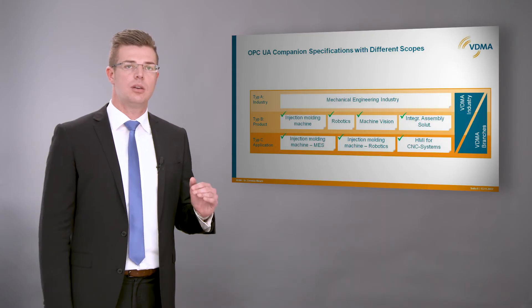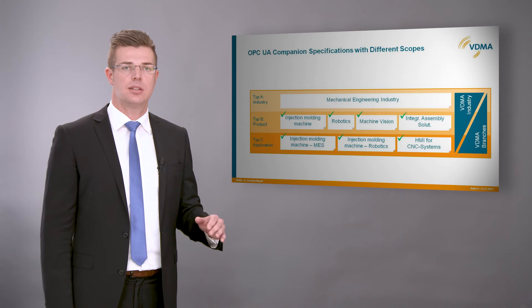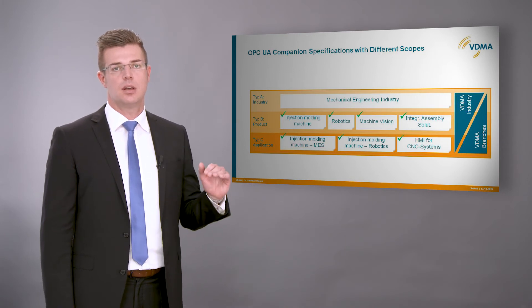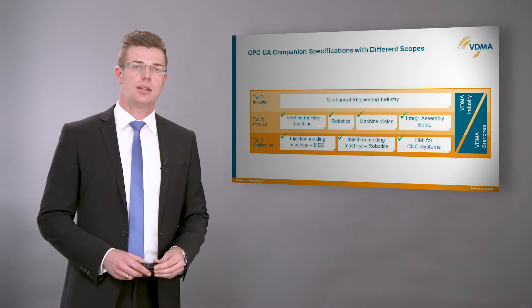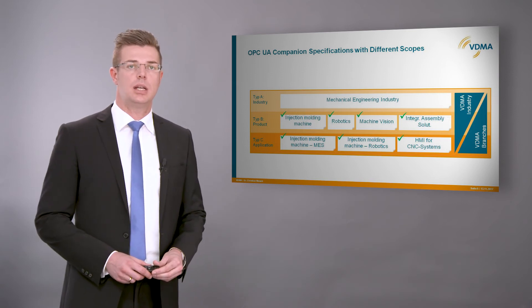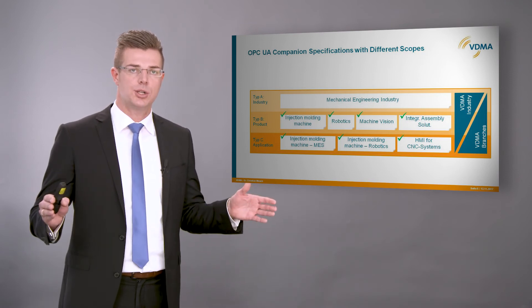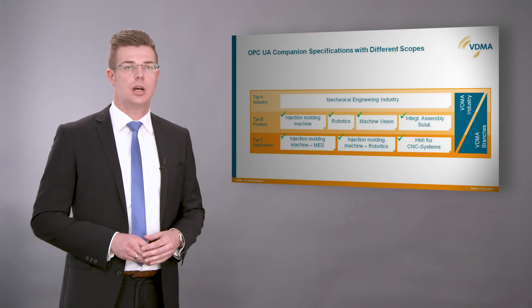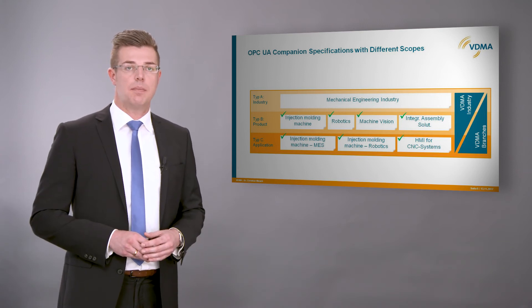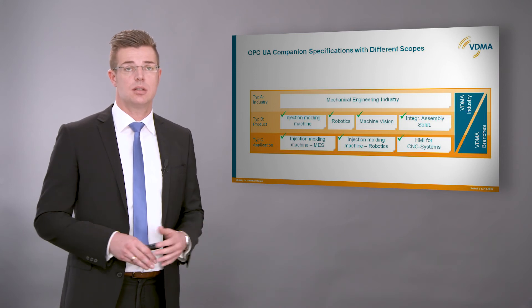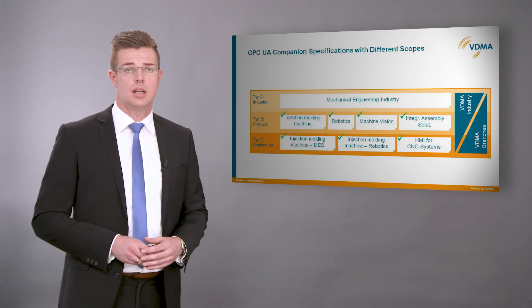OPC UA companion specifications have different scopes. We see the OPC UA companion specifications on three levels of detail. The most abstract level is for us the Type A level, where we are describing the whole manufacturing industry as a whole branch. On the other hand we have to describe the products and the applications on a concrete level with its properties in deep dive. These are the views of a Type B and a Type C level of OPC UA companion specifications.